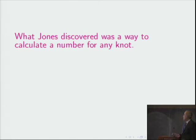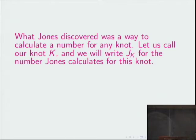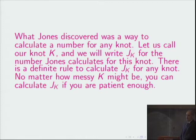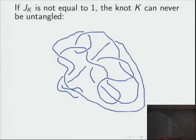So what Jones discovered, basically, was a way to compute a number for any knot. So we'll call our knot K, and we'll write J sub K for the number Jones calculates for this knot. So there's going to be a definite rule to calculate J_K. So no matter how messy the knot might be, such as the one I showed you a picture of a little while ago, you can calculate the number J_K attached to that knot if you're patient enough. And what Jones discovered is that if this magic number J_K is not equal to 1, the knot K can never be untangled. And moreover, if two different knots have different numbers, then they're not equivalent to each other. You can't bend and stretch one into the other without cutting the strands.